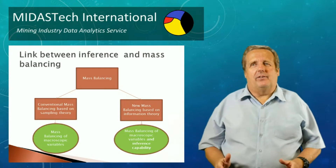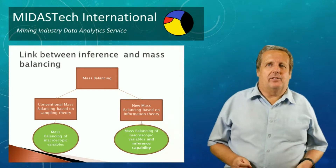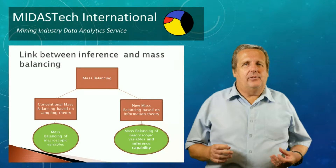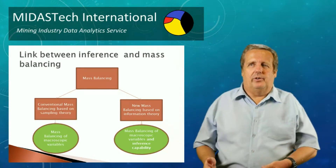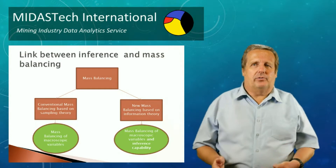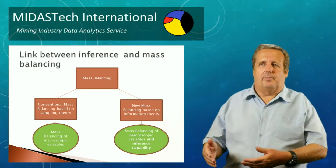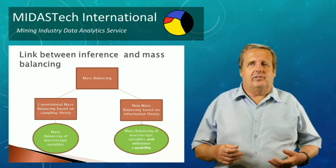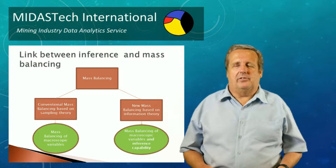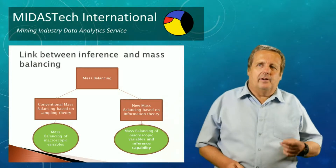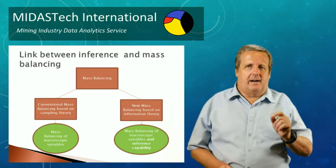Machine learning can be thought of as an intelligent extension of mass balancing methods. If we knew exactly how particles are being separated at each unit, we can identify the unit models and also identify how those unit models change with operating conditions. This gives us the basis of a very simple customised interface for users. The problem, therefore, is how to estimate the particle information.